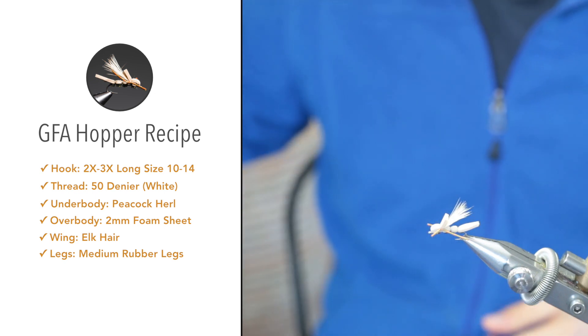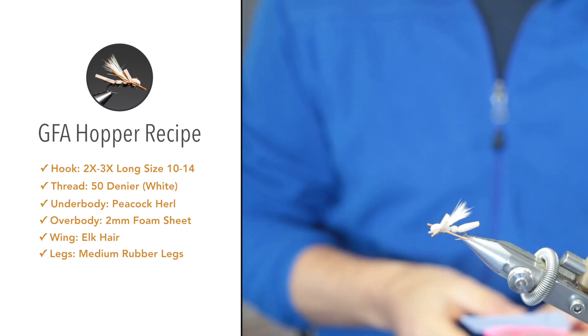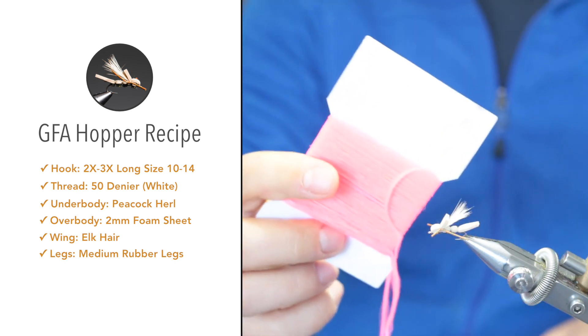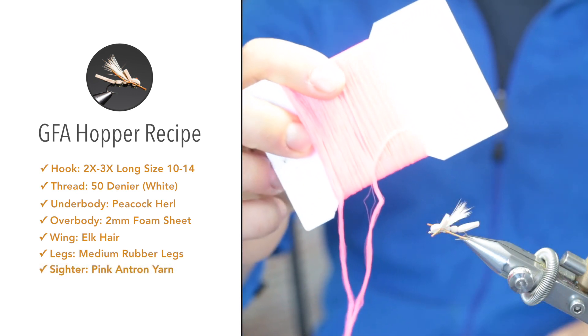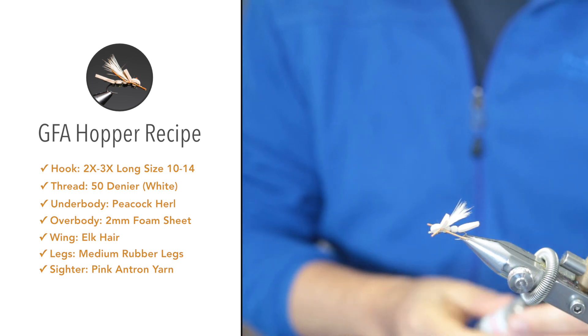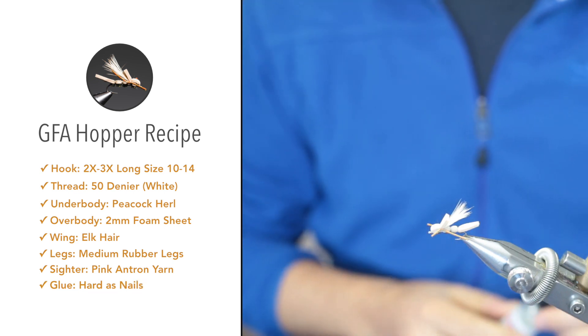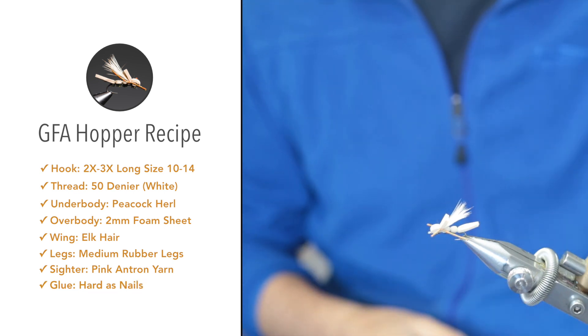For the legs I'm using round barred rubber legs with some orange barring. It's a very cool color. I don't have it on this fly but I'm going to tie a version just to show you, using some fluorescent pink antron yarn for a sighter. Other materials we'll need is some Sally Hansen's Hard as Nails. I use that just to seal the exposed thread at the bottom of the fly and also some super glue which gives the fly durability.